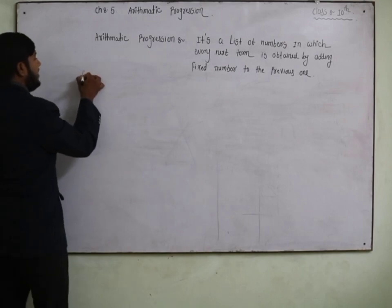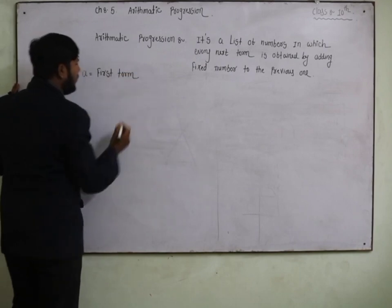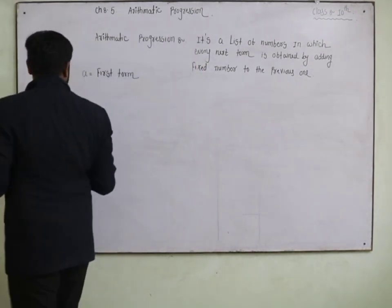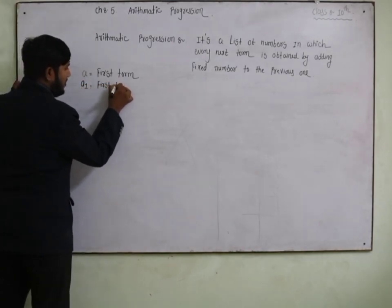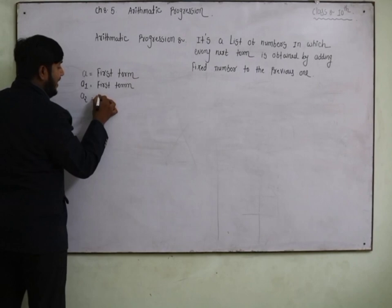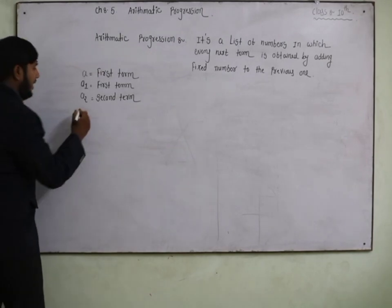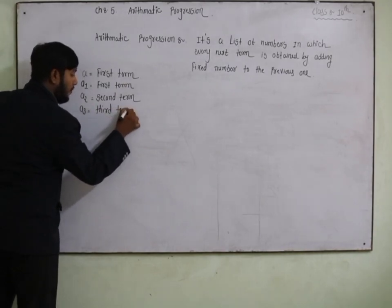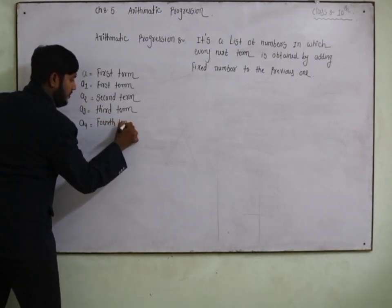Now let us understand 'a' and 'd'. 'a' is your first term — the first term is always 'a'. We can use 'a' or 'a1'. Then a2 is the second term, a3 is the third term, a4 is the fourth term, and so on.